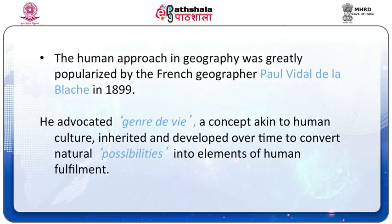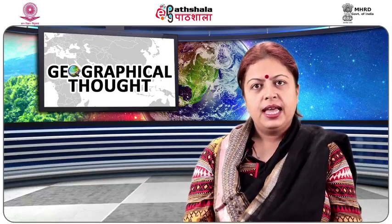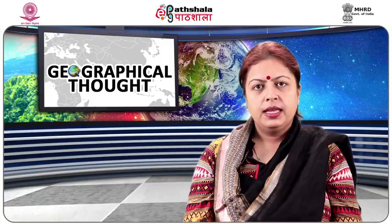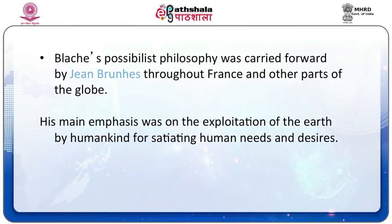The human approach in geography was popularized by the French geographer Paul Vidal de la Blache in 1899 with his introduction of a new dimension to the possibilistic philosophy. He may be regarded as the father of modern human geography. He advocated Genres de Vie, a concept akin to human culture that has been inherited and developed over time to convert natural possibilities into elements of fulfillment. Nature was conceived as a mere advisor and humanity as an active force of change. Blache's possibilist philosophy was carried forward by Jean Brunhes throughout France and other parts of the globe, with main emphasis on the exploitation of the earth by humankind for satiating human needs and desires.